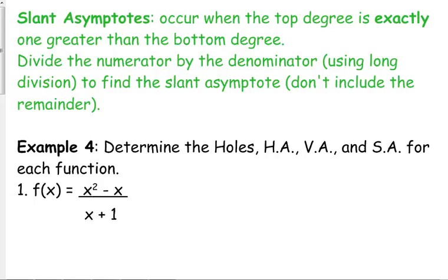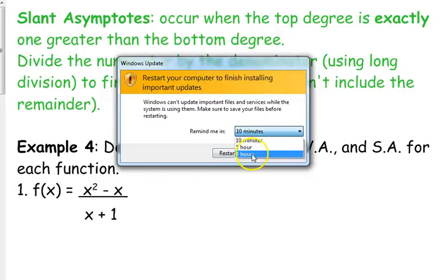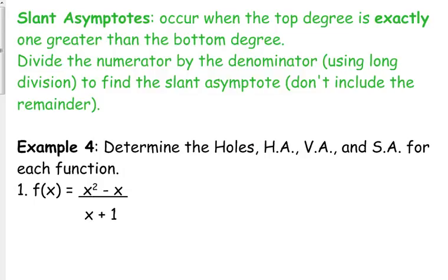So to figure out what that slant asymptote is, we're going to divide the numerator by the denominator using long division. And guess what? You don't have to worry about the remainder. You're only concerned about the quotient. The quotient by itself is your slant asymptote.